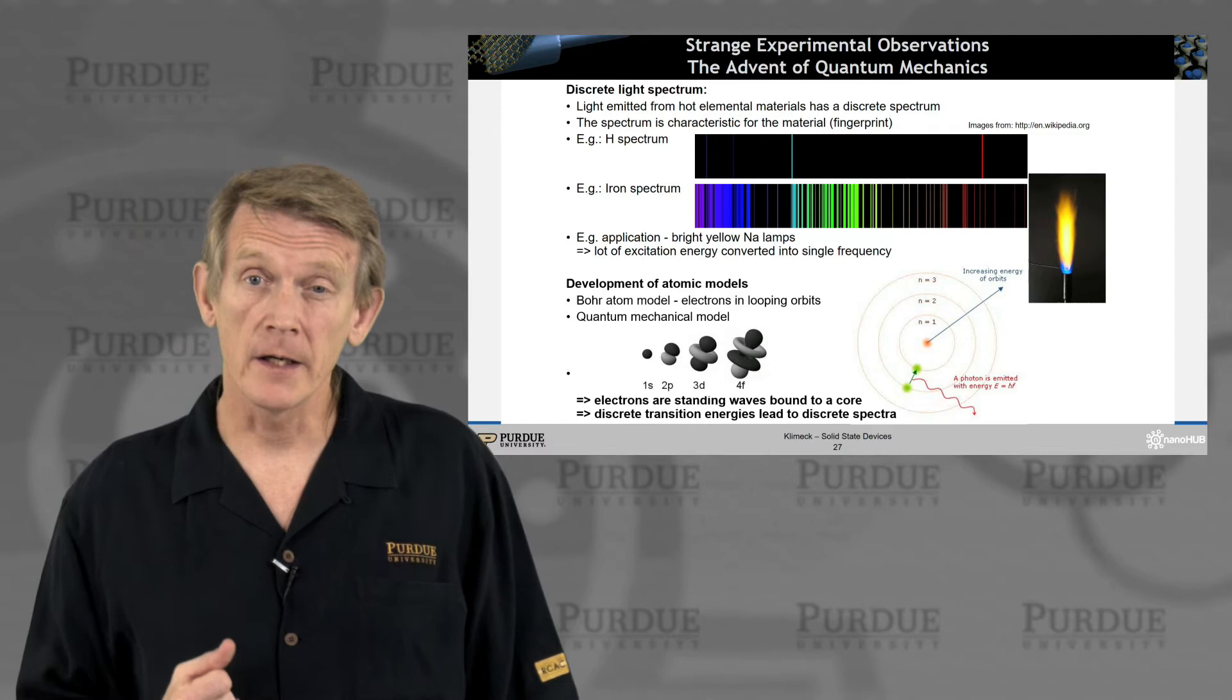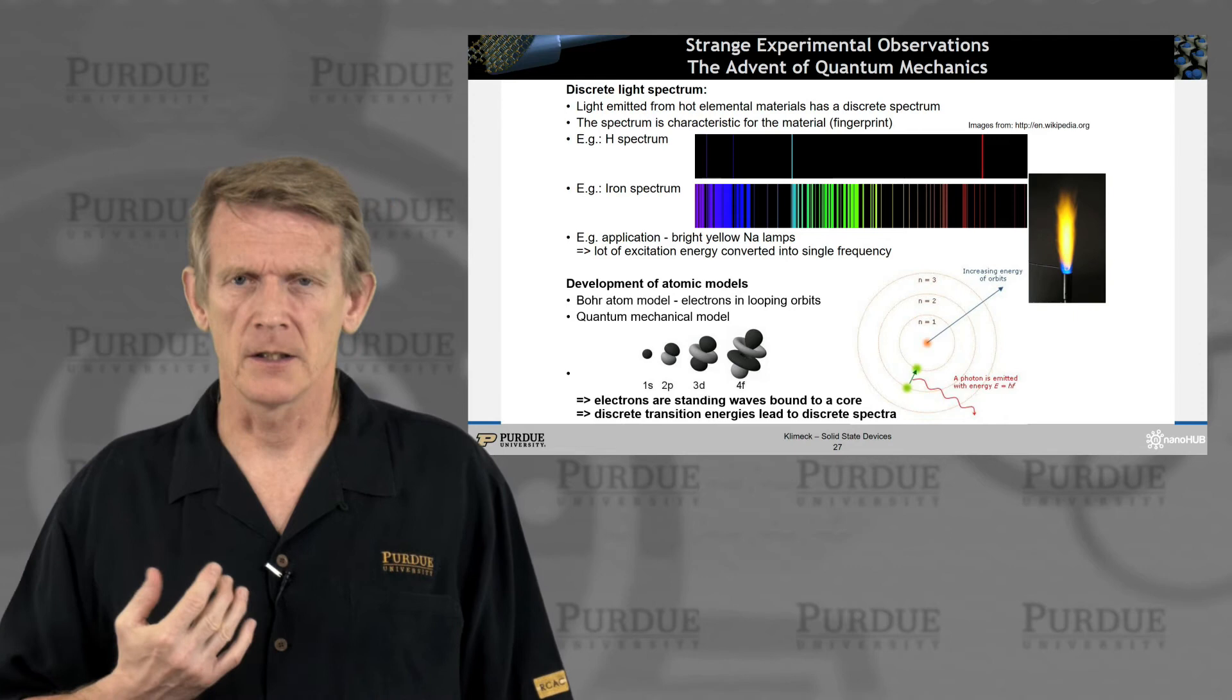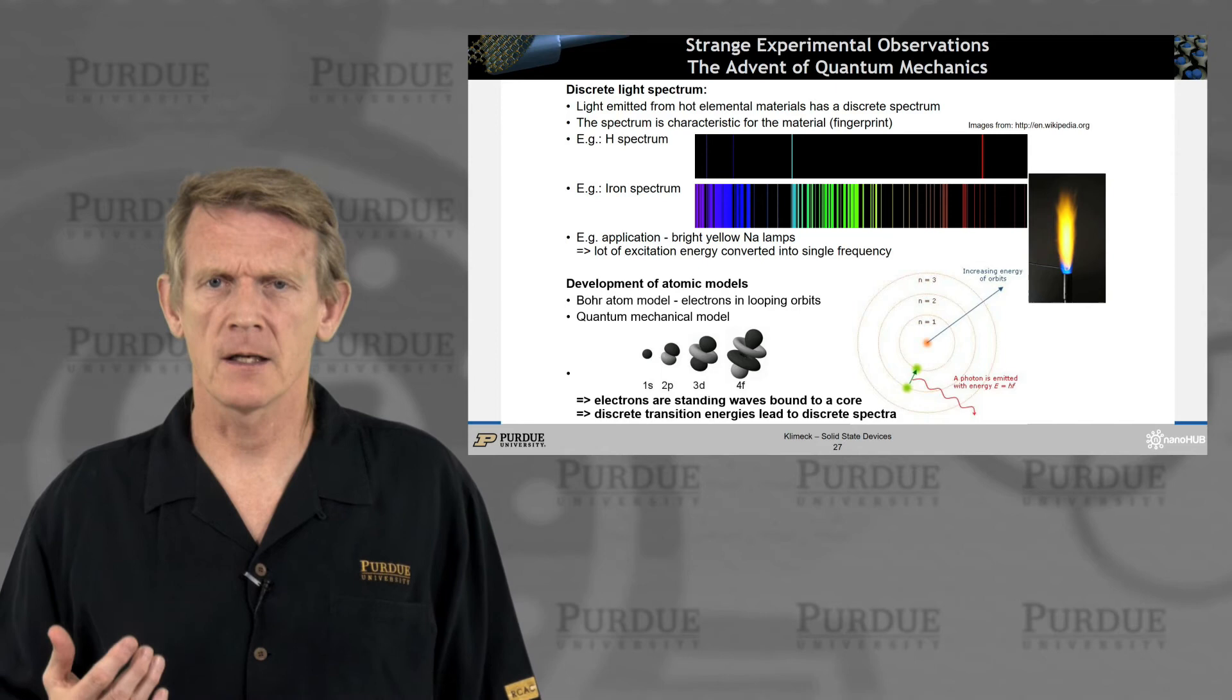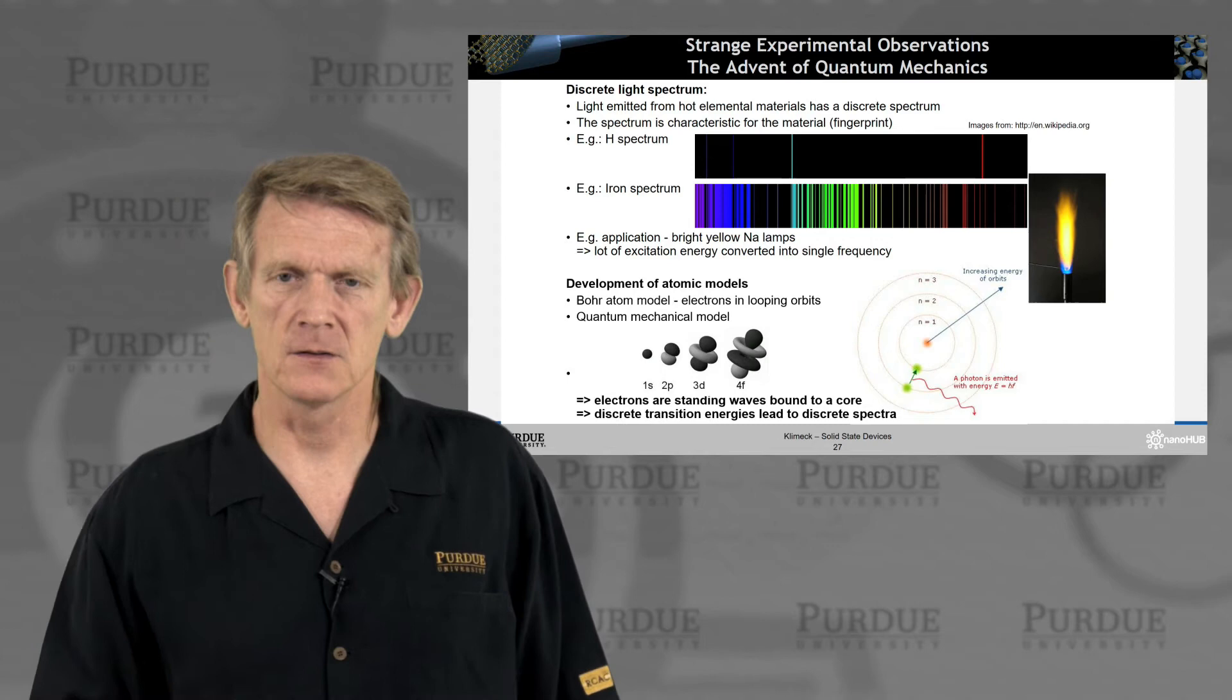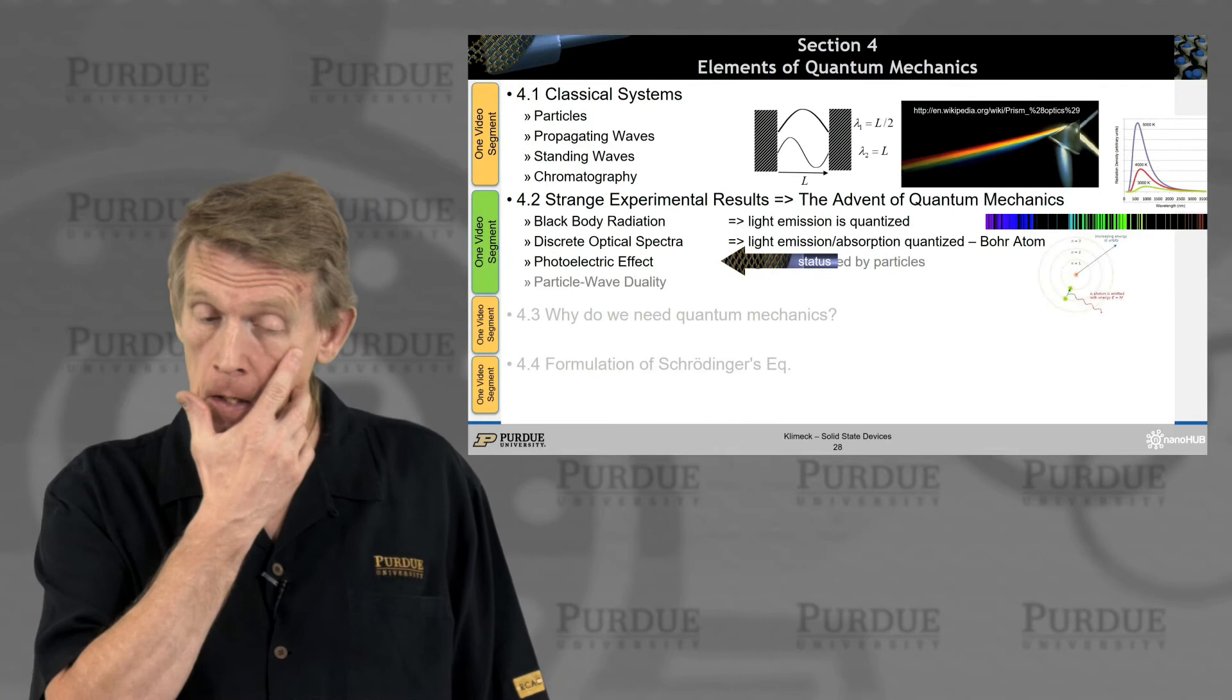All right. Again, you have a standing wave of an electron, and you normally think of an electron as a particle rather than a wave. And that standing wave has discrete energies. Now, the wave equation that is being solved for that is slightly different than the normal electromagnetic wave, but still it is a wave equation that leads, a quantized wave equation that leads to these quantized states.